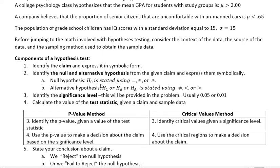An alternative hypothesis, which is H sub one — though H sub a, either capital or non-capital, are also very common ways to state the alternative hypothesis; they're all the same thing. The alternative hypothesis is stated with does not equal, is less than, or is greater than. So that's the difference when we state them — we use different symbols.